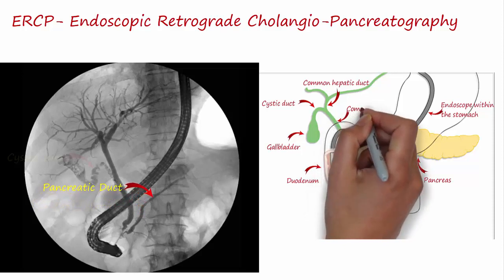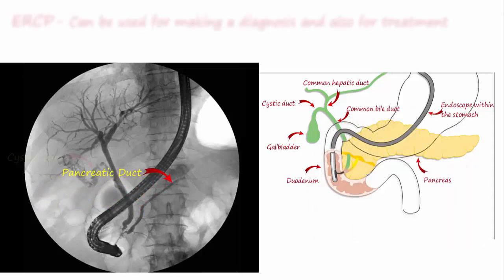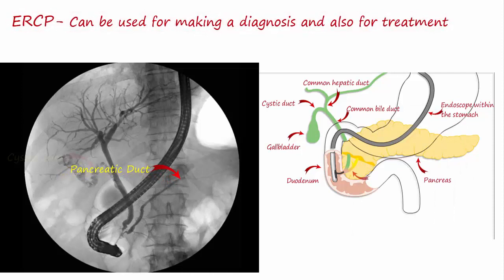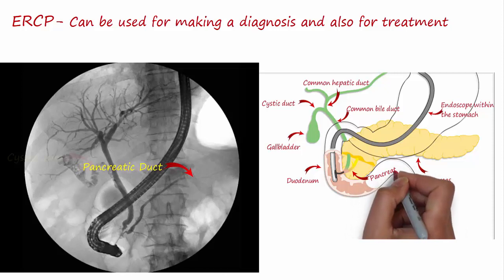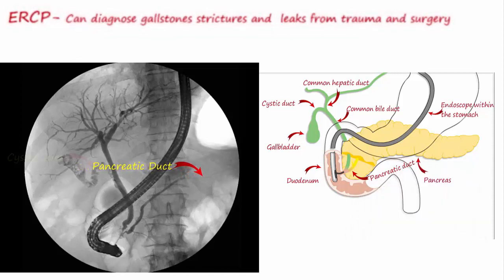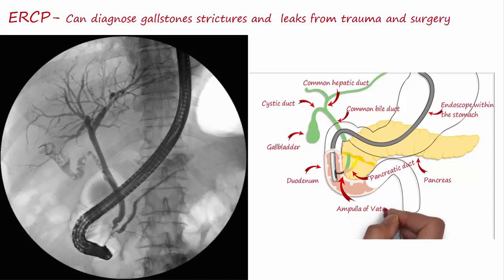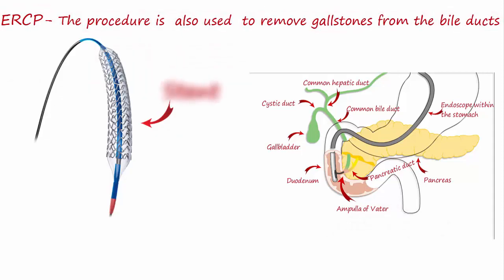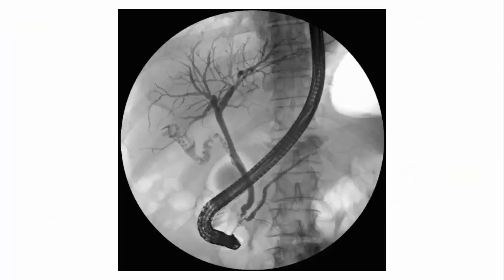These structures are otherwise not visible without contrast. ERCP can be performed for diagnostic and therapeutic reasons. The procedure is used primarily to diagnose gallstones, strictures, and leaks from trauma and surgery. It is particularly useful to help patients in cases of obstructions in the biliary system caused by certain cancers. Frequently, stents are inserted to relieve obstructions and increase quality of life. The procedure is also used to remove gallstones from the bile ducts.